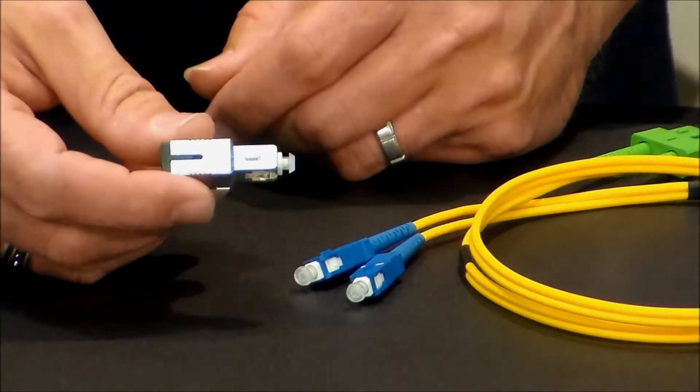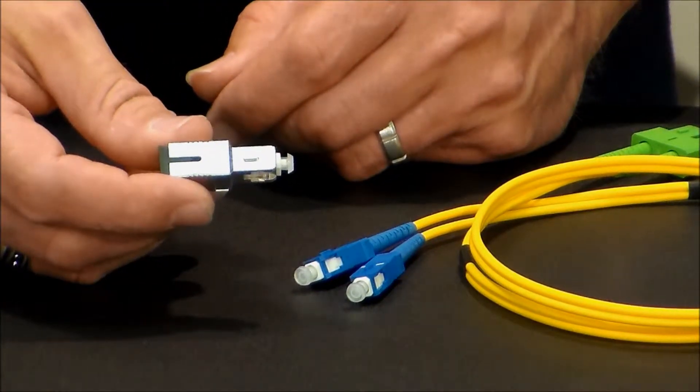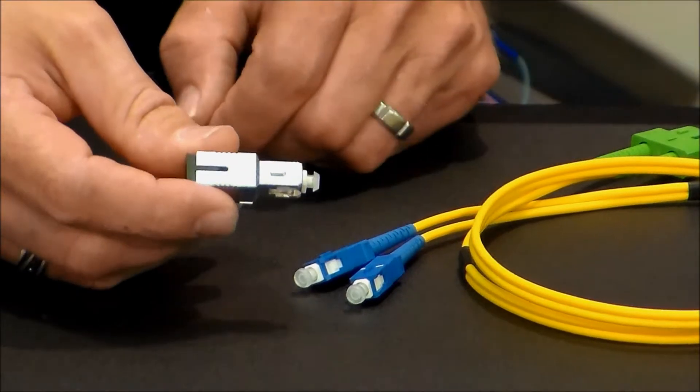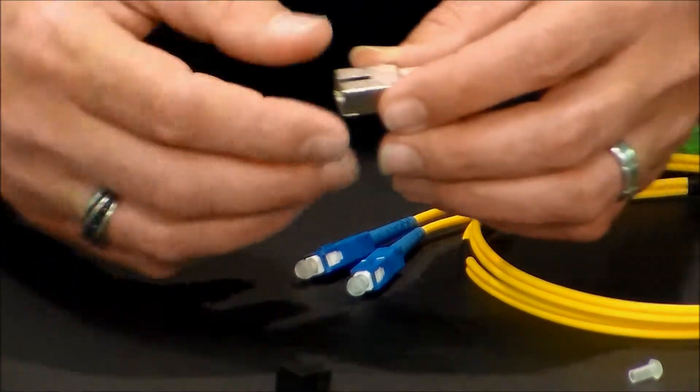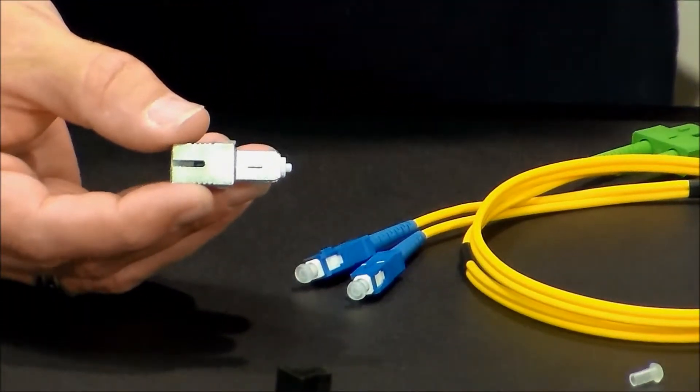So here we have the male-to-female type fiber optic attenuator. You just simply remove the caps like so. And this is a male-to-female type.